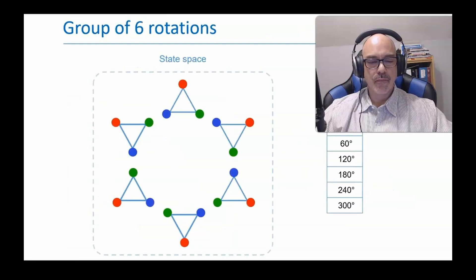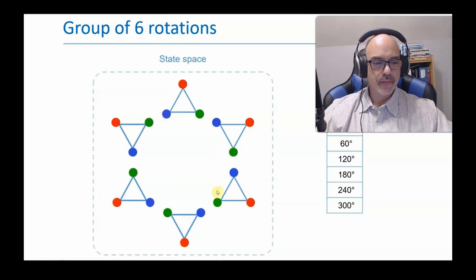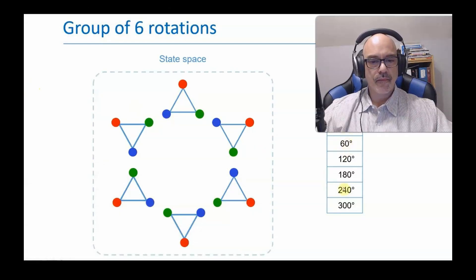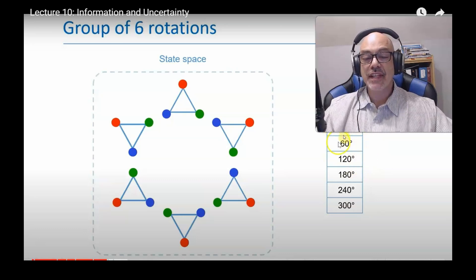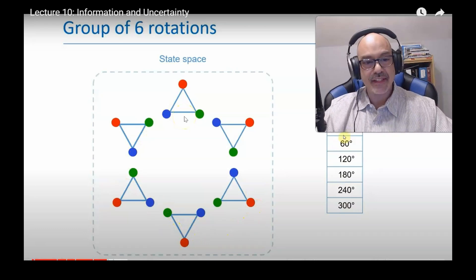Next, consider a rotation by 60 degrees, one-sixth of a full rotation. This expands the state space to six different orientations, and it expands the group to six different transformations. By allowing a rotation of 60 degrees, you can double the number of eigenvectors in the state space.